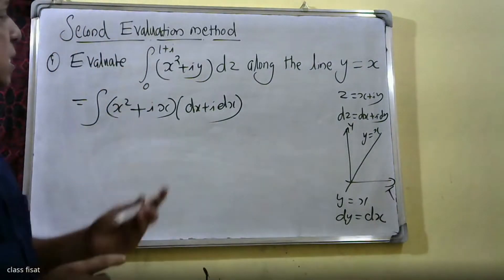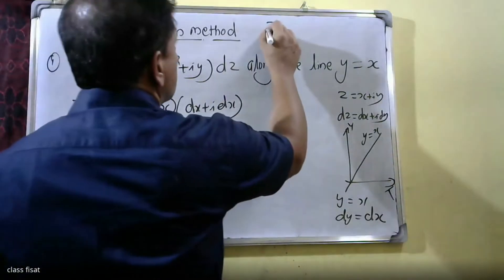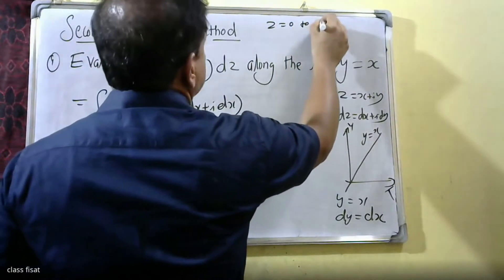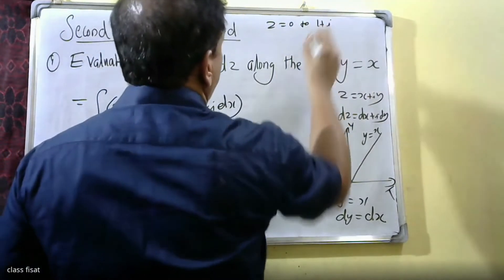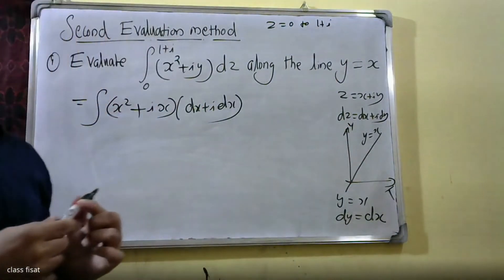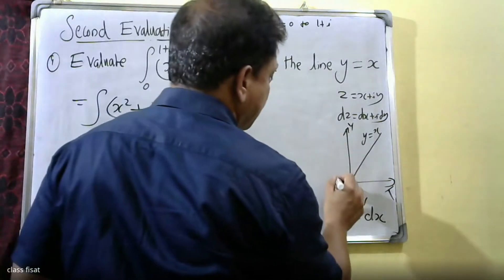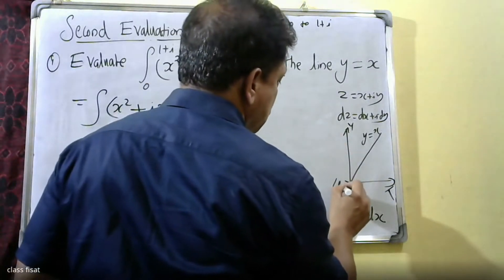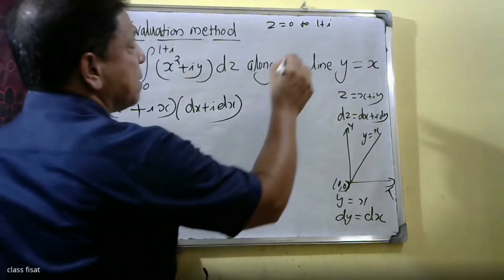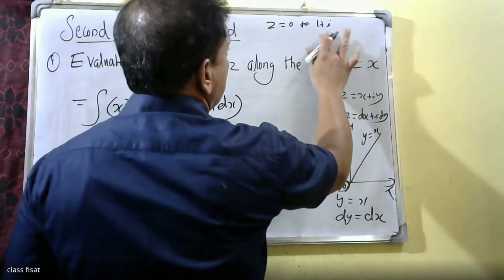The upper limit is 1 plus i, which corresponds to x equals 1. The lower limit is 0, and the upper limit is 1. Lower limit is 0, upper limit is 1. When x equals 0, we get 0.